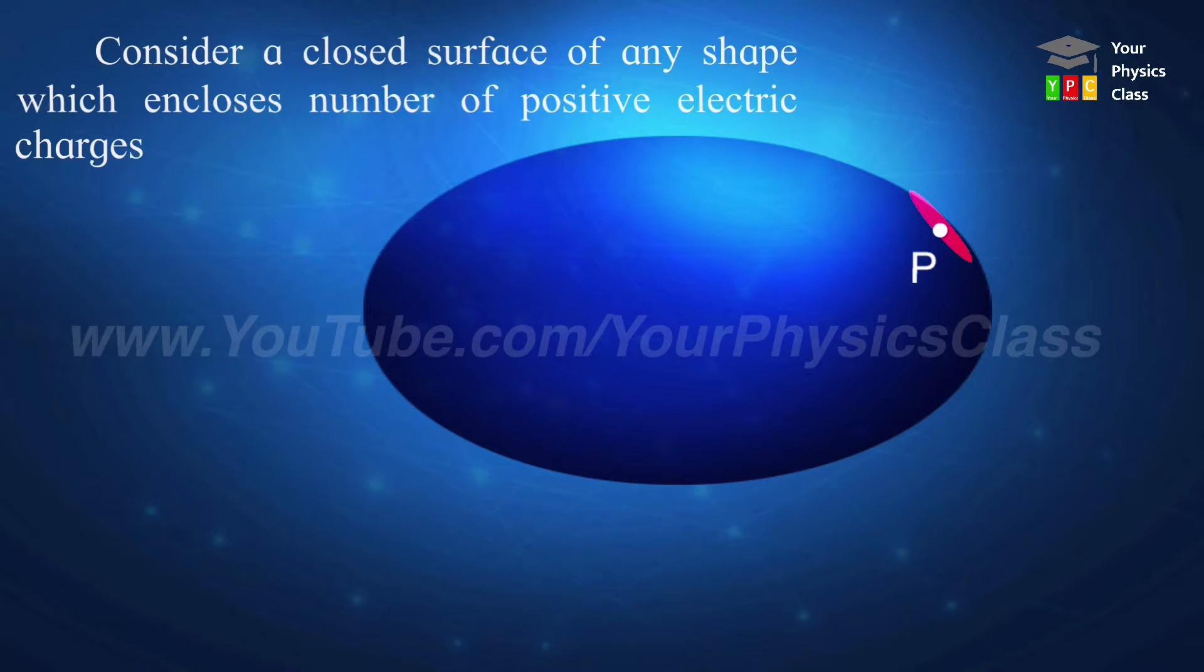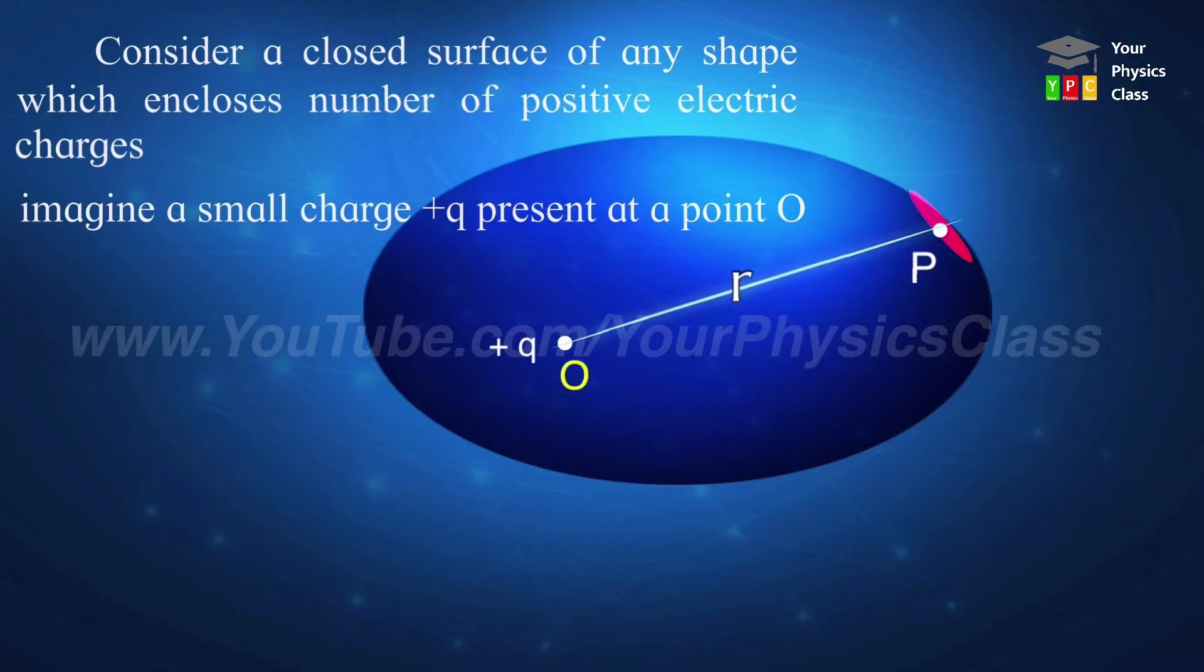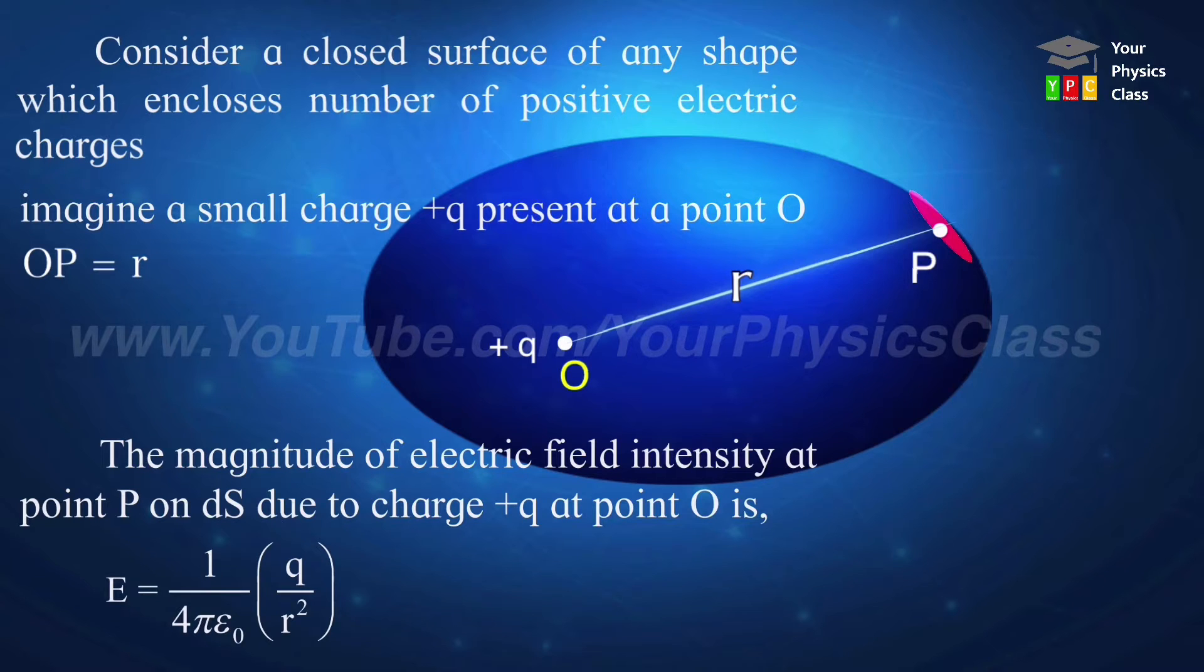And I need to find how much flux is going through this dS. For this I will imagine a small charge plus q inside this closed surface. I have placed plus q charge at point O, and this surface point P is at distance r from it. Then electric field intensity due to point charge q at point P is given by E equals one upon four pi epsilon zero q upon r square. The direction of this E is away from O.